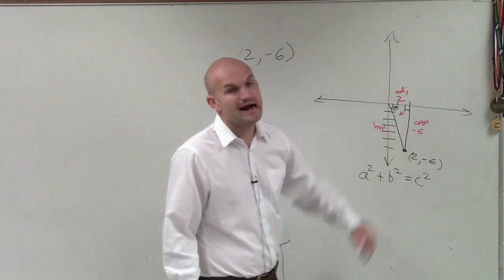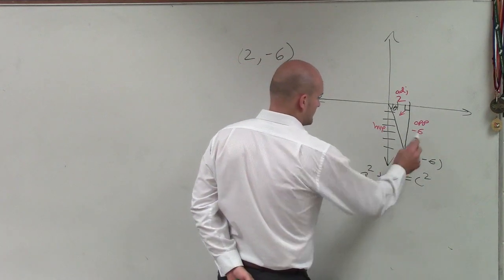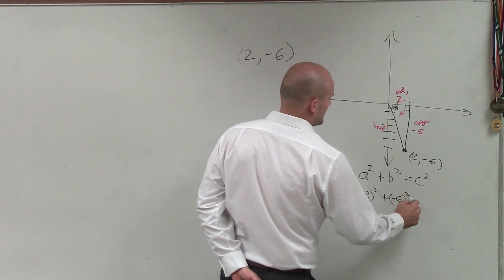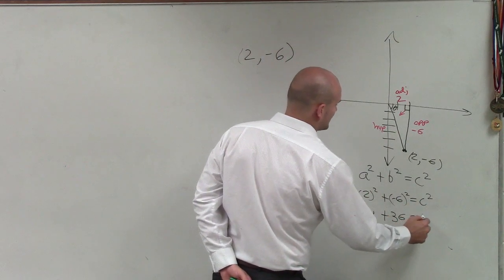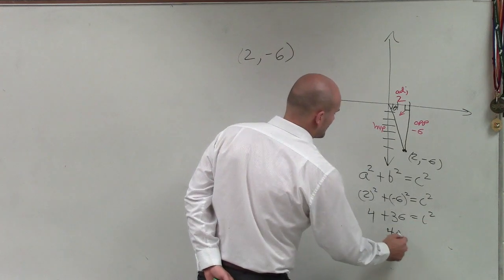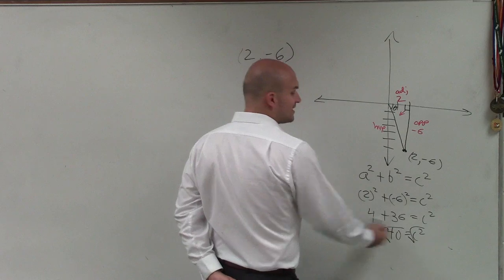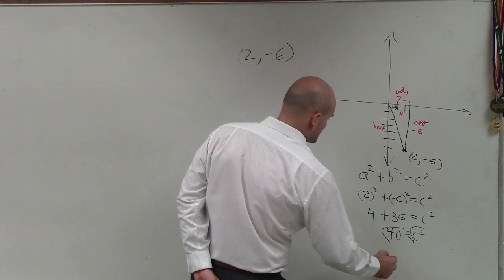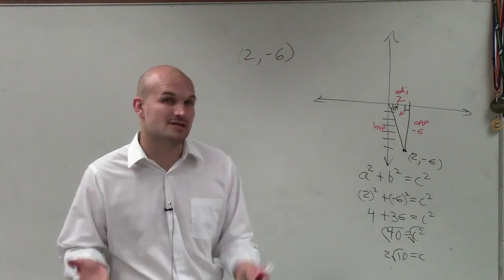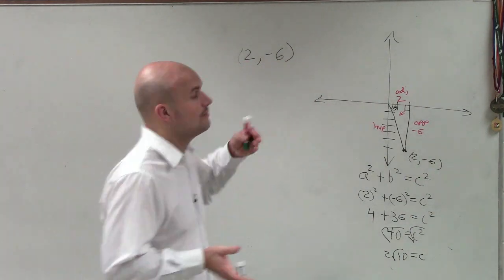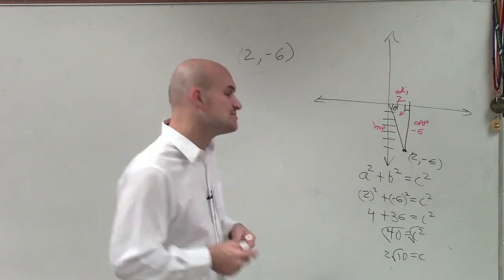Remember, your adjacent and your opposite are going to be your two legs. So I can take 2 squared plus negative 6 squared, which equals c squared. That's 4 plus 36 equals c squared. 40 equals c squared — take the square root — which simplifies to 2 square root of 10 equals c. Remember, the length of the hypotenuse is always going to be positive. The x and y values can be positive or negative, but the hypotenuse is a distance, which will always be positive.